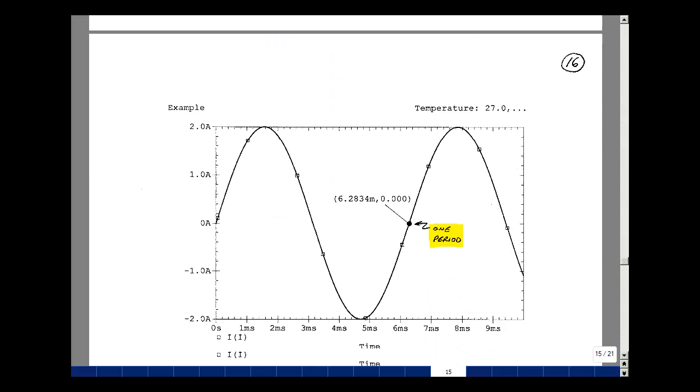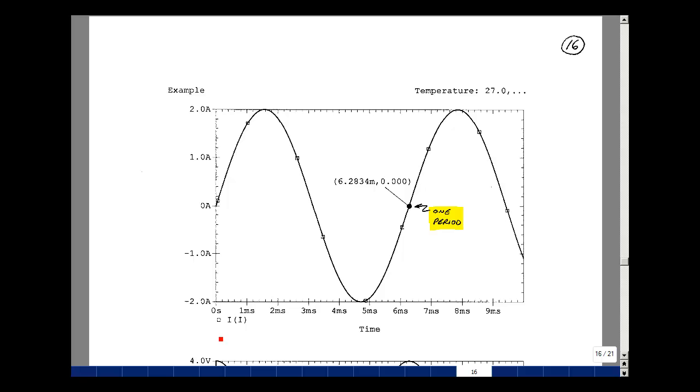I always like to check that my source is what I think it is, and so I'm just going to ask for the current of the current source. It's showing me here that I've got a sine wave with an amplitude of 2, and it goes up to plus 2 and then minus 2 amps. And then if we take one period here, it's equal to 6.283 milliseconds, and that's what we just calculated.